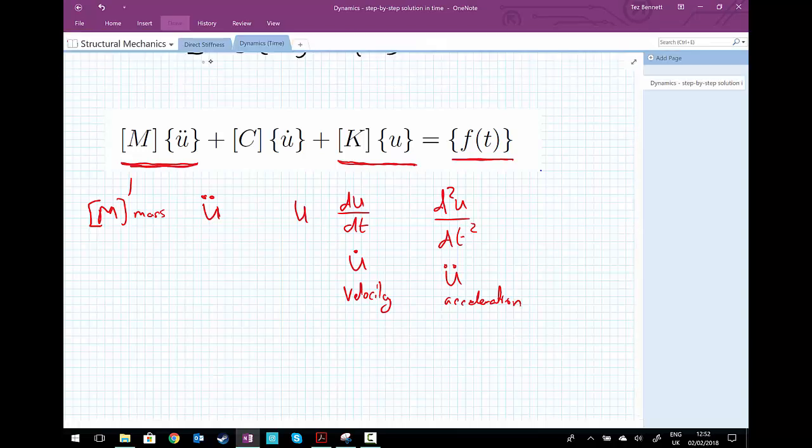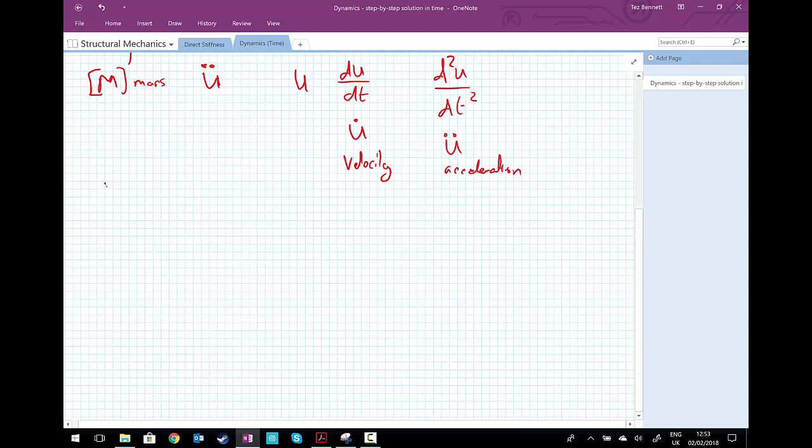Following on from the direct stiffness work for static equations, we know how we can assemble the stiffness matrix. Now we need to look at how the element mass matrices can be defined. In one dimension, we're just going to consider the bar. We can do more complicated elements like beams, plates, shells, and continuum elements at some other point in the future. But for now, we're just going to consider a bar element that can have displacements, velocities, and accelerations just at the nodes U₁ and U₂.